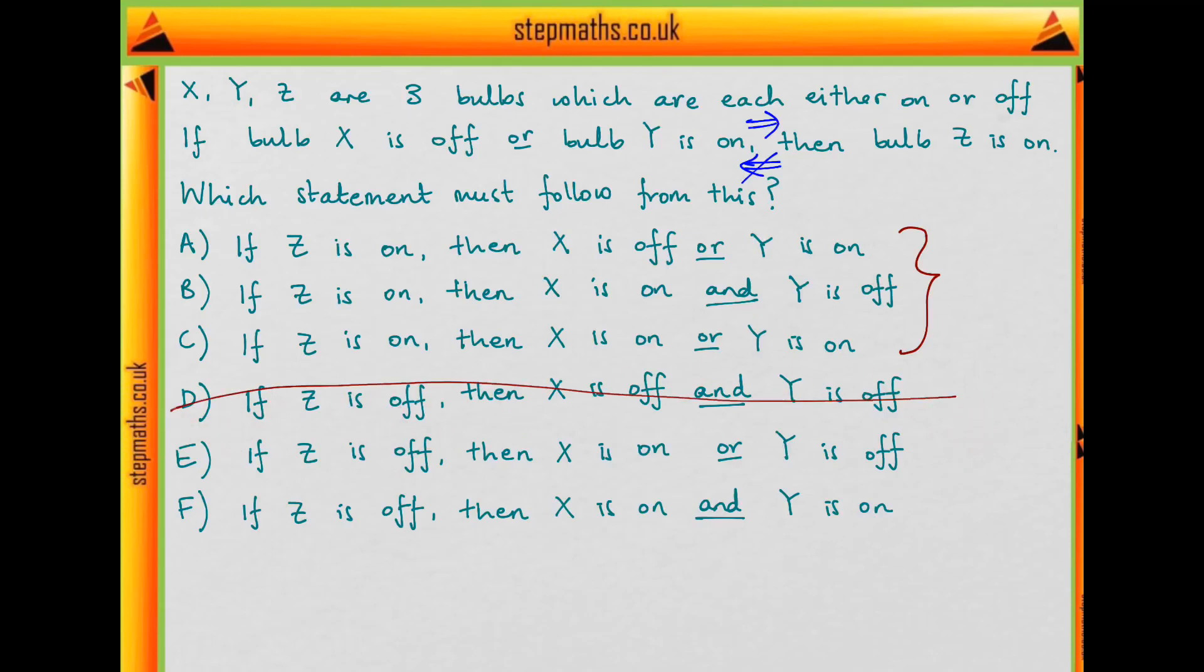And for this last one, Y is on here, but Y being on would imply Z is on, yet we're given that Z is off. So this statement isn't consistent with the one we're given either. So we get rid of that one. We're left only with answer E.